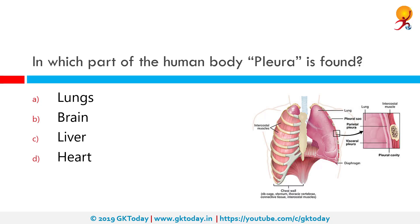In which part of the human body is the pleura found? The pleura is found in the lungs. A pleura is a serous membrane which folds back onto itself to form a two-layered membranous pleural sac. The outer pleura is attached to the chest wall but is separated from it by the endothoracic fascia.